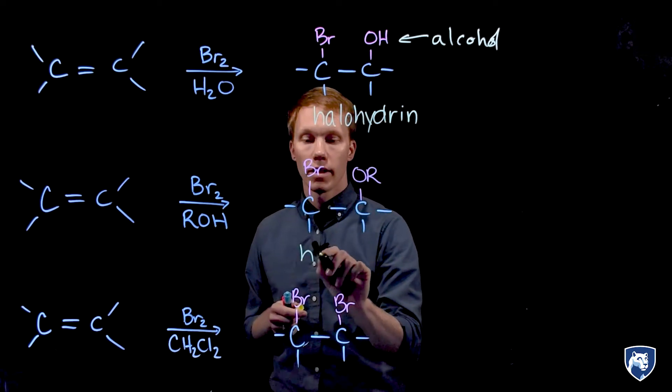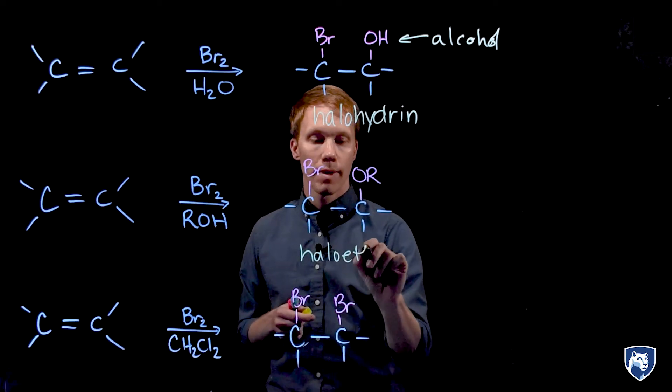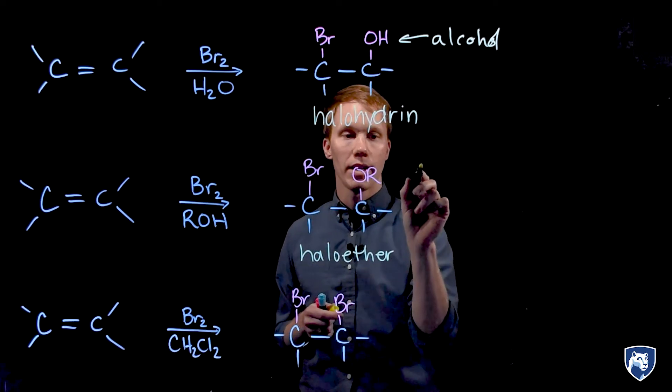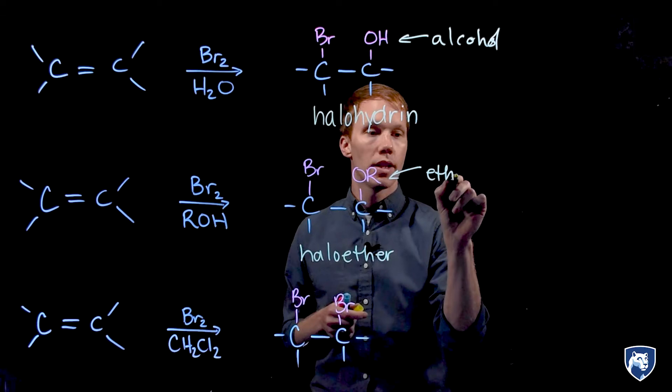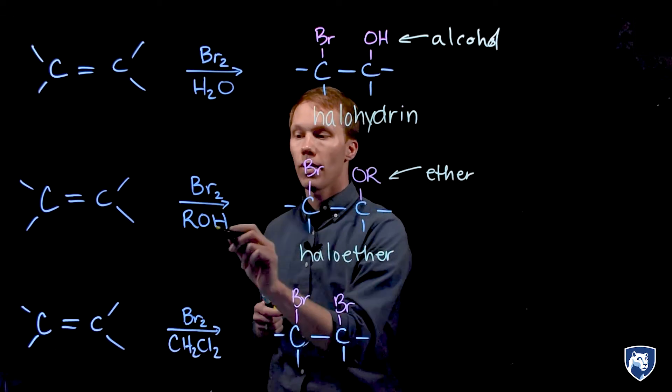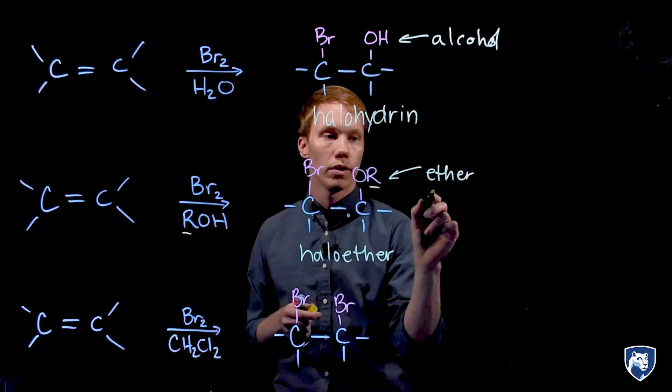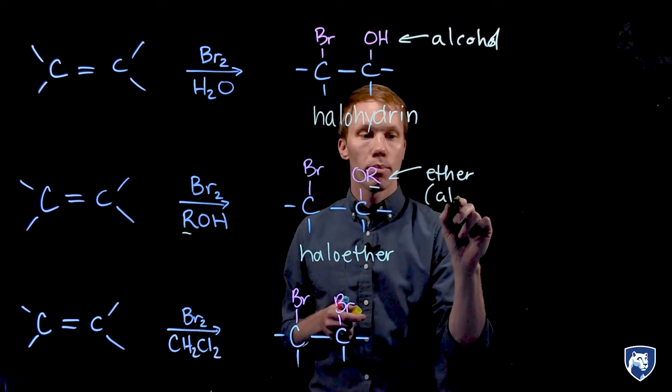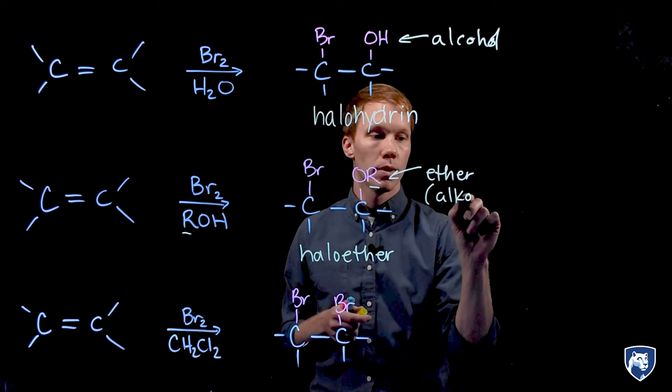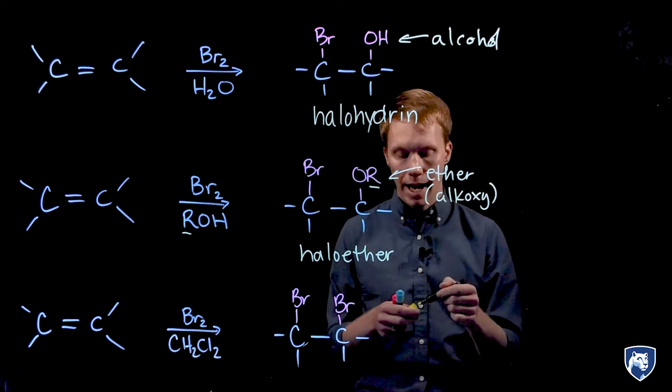A haloether, as you might imagine, has an ether functionality. The R group would come from the R group of my alcohol, and so we've added a bromine and an alkoxy group to my alkene.